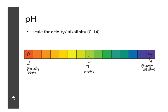What makes an acid acidic is hydrogen ions, so at very low pH values we have a high concentration of hydrogen ions. But that doesn't mean there are no hydroxide ions present — under all conditions, as long as something is dissolved in water, there will always be some hydroxide ions present. This is because water can undergo a reaction called self-ionization.